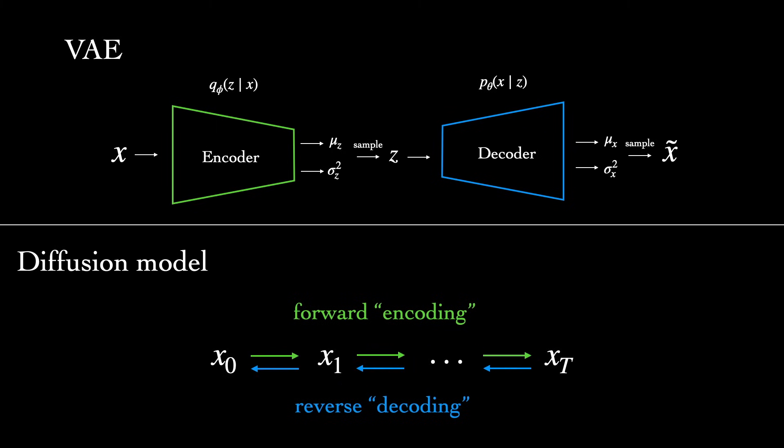Now, unlike a VAE encoder, the forward process here is typically fixed. It's the reverse process that we focus solely on learning. This means that only a single network needs to be trained, unlike in a VAE where two networks are trained jointly.